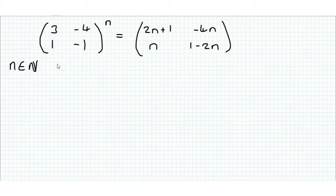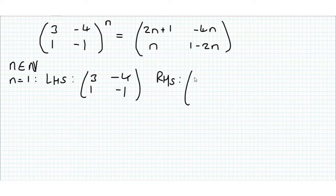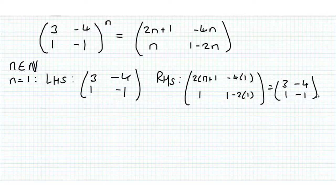So if you remember from our last videos, the first thing we do is show that this is true for n=1. Taking n equal to 1, the left hand side is (3, -4; 1, -1), and the right hand side is (2×1+1, -4×1; 1, 1-2×1), which equals (3, -4; 1, -1). Brilliant, so it does work for n equal to 1.